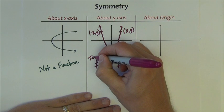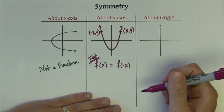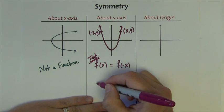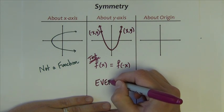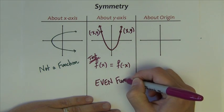This is kind of a test we can use. We call these functions when this happens, we call them even functions.